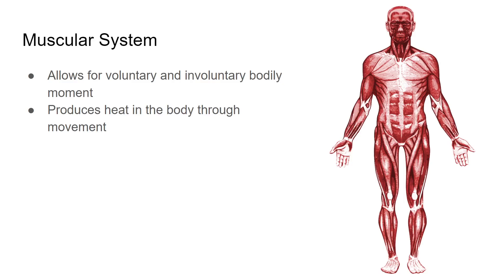And also involuntary bodily movements — when you're sitting down, your heart is beating. You're not telling your heart to beat. That is something that's completely involuntary, but that is also your muscular system. And it also produces heat in the body through movement. Whenever you're working out, you start sweating and feeling hot. That is because whenever your muscular system moves, it generates heat. When you do bicep curls and then touch your bicep, it might feel a little bit hot — that's your muscular system producing that heat.